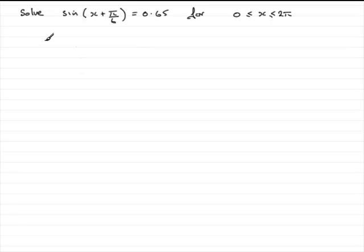Well first of all, what you need to do is inverse sine both sides, so you get therefore x plus pi upon 6 equals the inverse sine of 0.65.